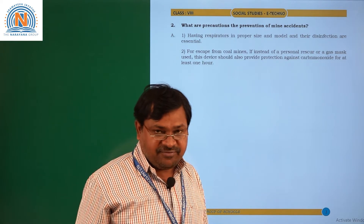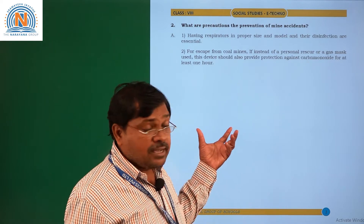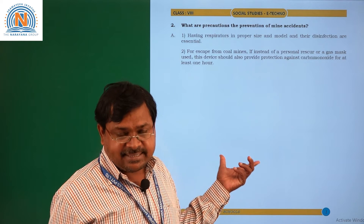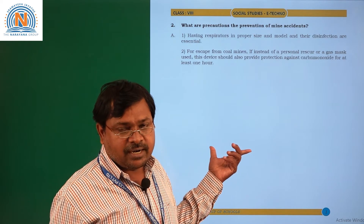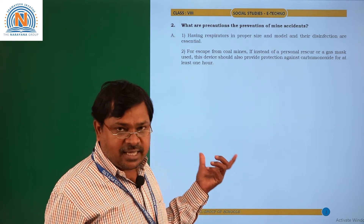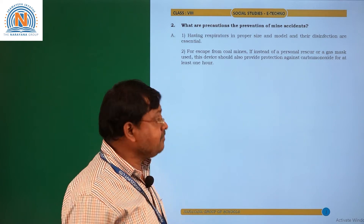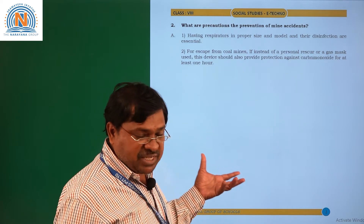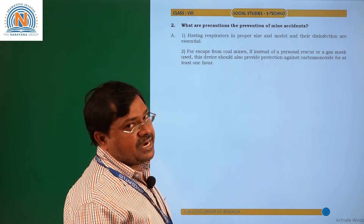As already told in the previous class, mining is very dangerous because it is a place of accidents. Different types of important gases also leak from the layers and interior part of the earth. So, what type of precautions are taken when accidents occur?